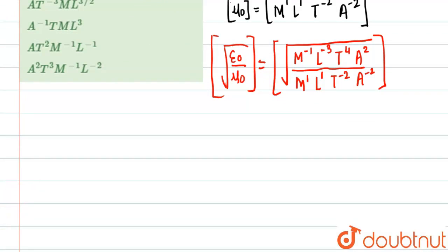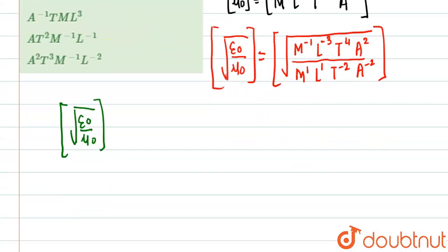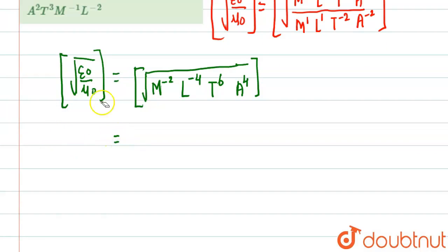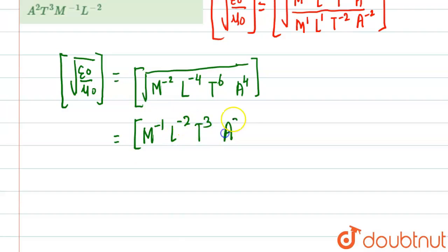Now we solve. The M one from below goes up and becomes M minus two. L becomes L minus four. T becomes T six and A becomes A four. Taking the square root of this gives us M minus one, L minus two, T three, A two.